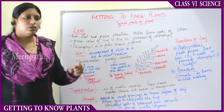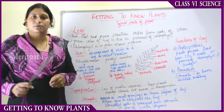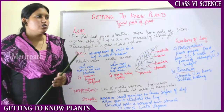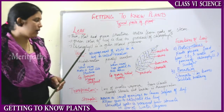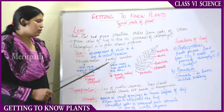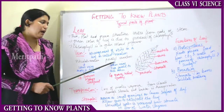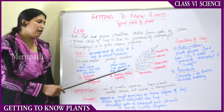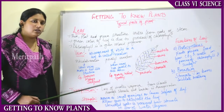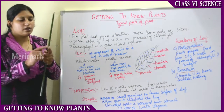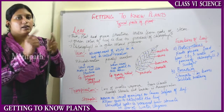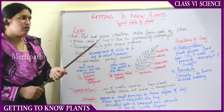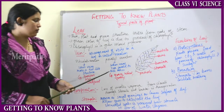In parallel venation, veins run parallel to each other. For example, grass which grows on the ground grows in a V-shaped structure — that is parallel venation. The veins run parallel to each other like a V-shaped structure.